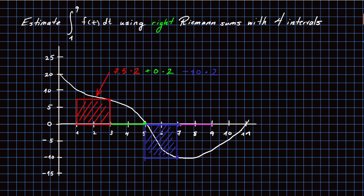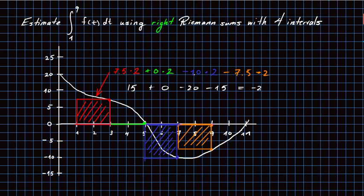For the last interval, 7 to 9, the right-hand endpoint gives a value of 7.5. However, this region is below the x-axis, so we count it negatively: minus 7.5 times 2 equals minus 15. Summing up: 15 plus 0 minus 20 minus 15. The 15s cancel, leaving a right-hand sum estimate of minus 20.